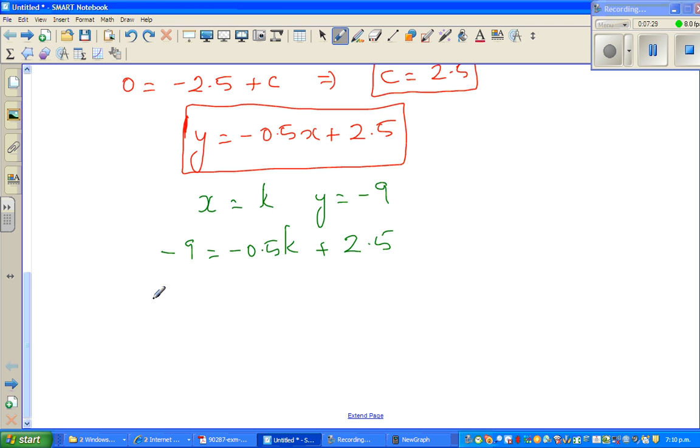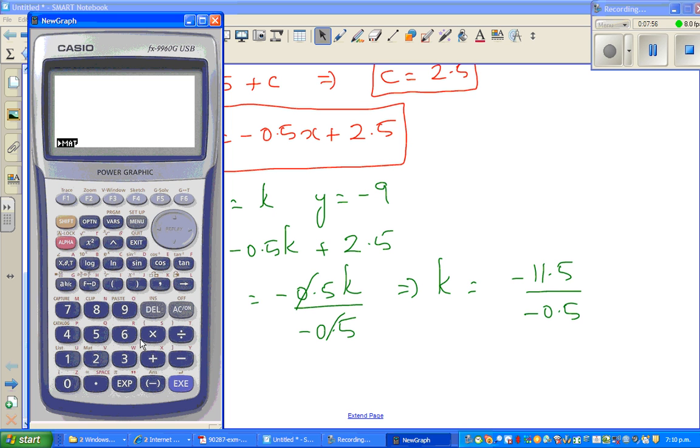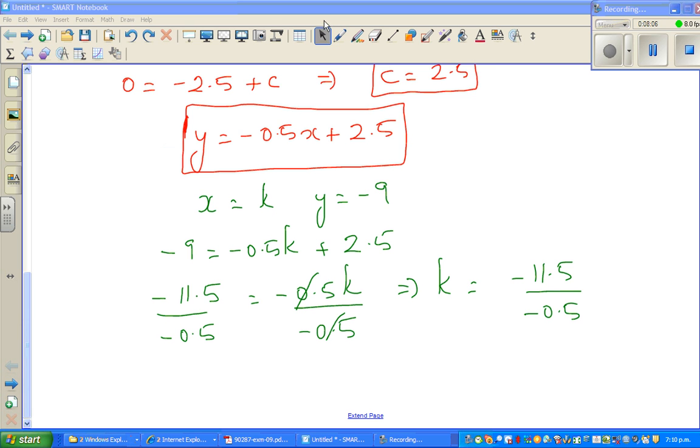Now you take away 2.5 from both sides, it's negative 11.5, is equal to negative 0.5 k. So we divide this side by negative 0.5. I'm going to divide this side by negative 0.5. So this and this gets cancelled, which implies k is negative 11.5 divided by negative 0.5. So let me use the calculator. So negative 11.5 divided by negative 0.5. That will be 23. So your k-value is 23. k is equal to 23.